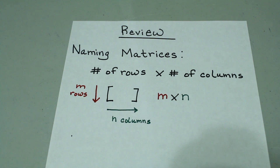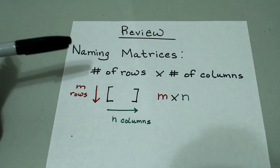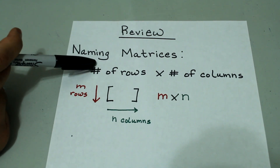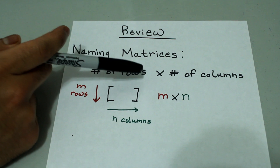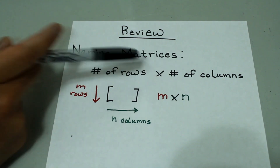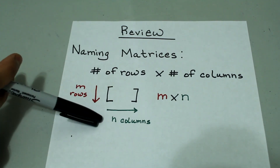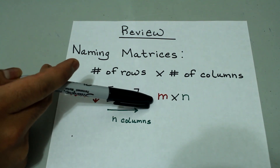First, let's quickly recap some basics about matrices. Matrices are named based on the number of rows and the number of columns. The convention for writing matrices is number of rows by number of columns. So if we have m rows and n columns, then our matrix is m by n.